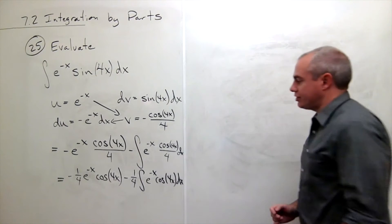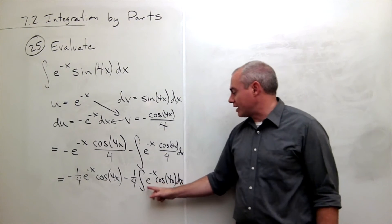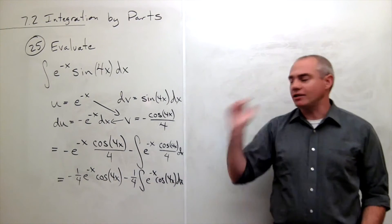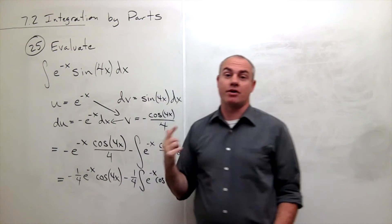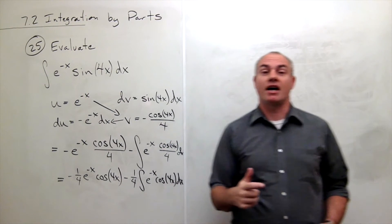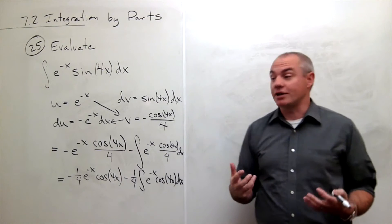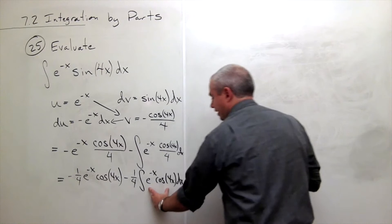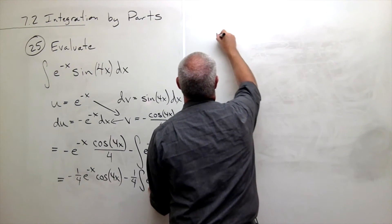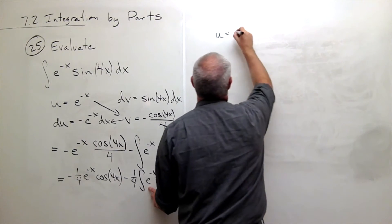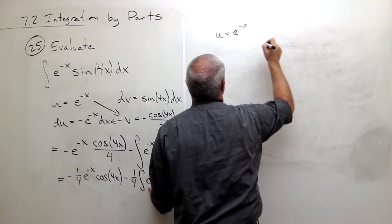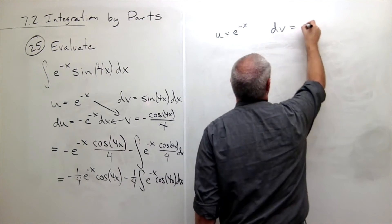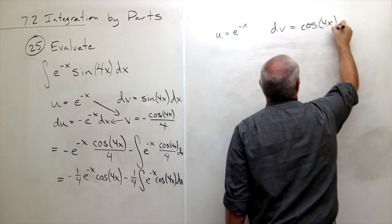Now to finish this problem off, I need to integrate e to the negative x cosine of 4x dx. You might say that looks a lot like what I started with, except there's a cosine instead of a sine — and it's true. So we need to use integration by parts again. My u is going to be e to the negative x, and my dv is going to be cosine of 4x dx.